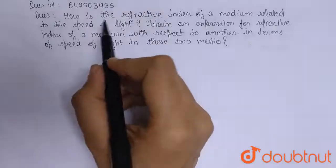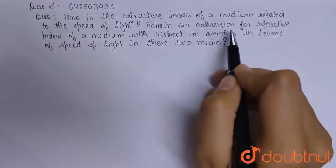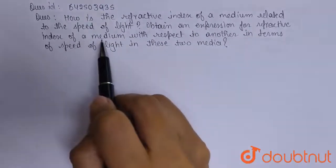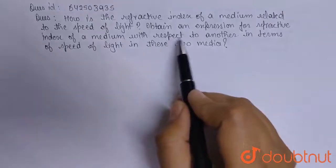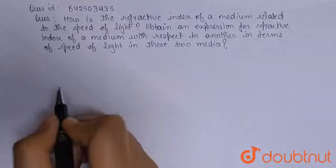The question here is how is the refractive index of a medium related to the speed of light? Obtain an expression for refractive index of a medium with respect to another in terms of speed of light in these two media.